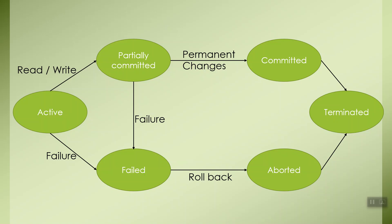When the transaction is getting executed in the active state or in the partially committed state, some failure occurs due to which it is impossible to continue the normal execution. Then it enters into the failed state. After the transaction has entered into a failed state, all the changes made by it have to be undone, and it becomes necessary to roll back the transaction.